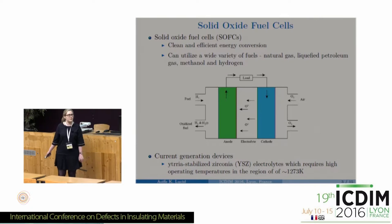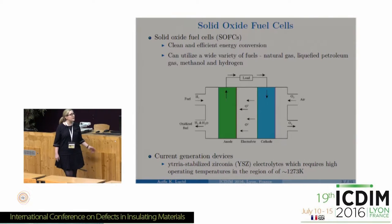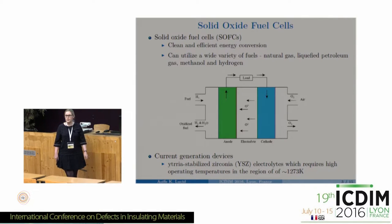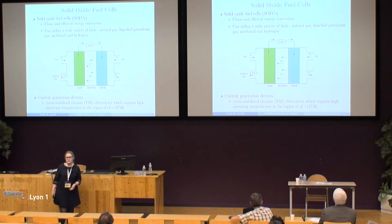The problem is that current generation devices use yttria-stabilised zirconia electrolytes for the most part, and these require very high operating temperatures for oxide ion conductivity to occur. Other components such as the cathode also require high temperatures, and this high temperature leads to short device lifetimes due to degradation and increases costs because expensive interconnect materials are needed.